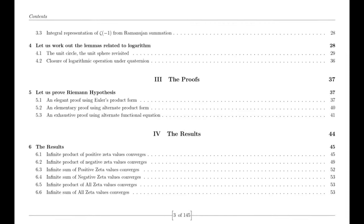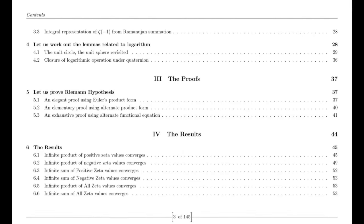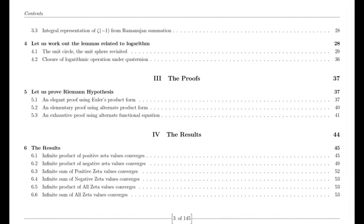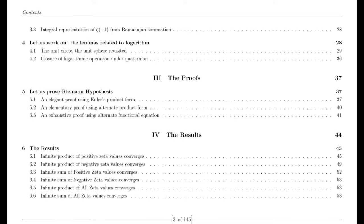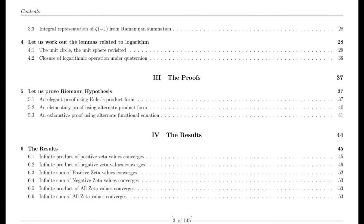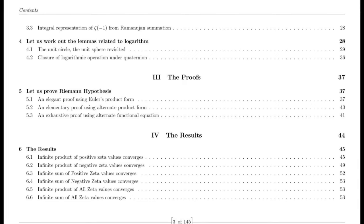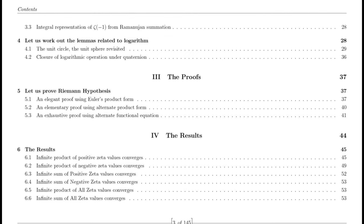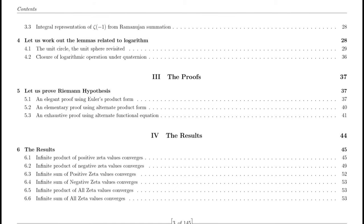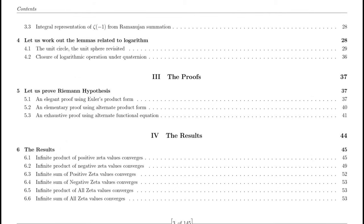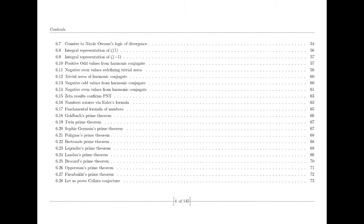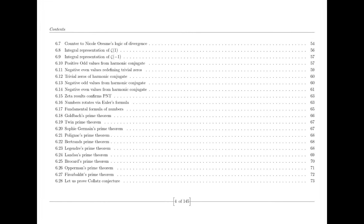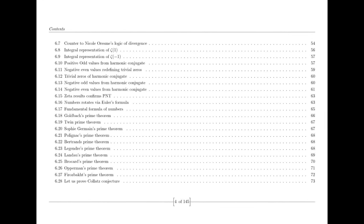Before we delve into the process of extending the domain of the Riemann zeta function and my personal journey in attempting to prove the Riemann hypothesis, let's first grasp the essence of what the hypothesis is all about. The Riemann hypothesis was formulated by Bernhard Riemann, a German mathematician, in 1859. It revolves around the distribution of prime numbers and their connection to the zeros of the Riemann zeta function.